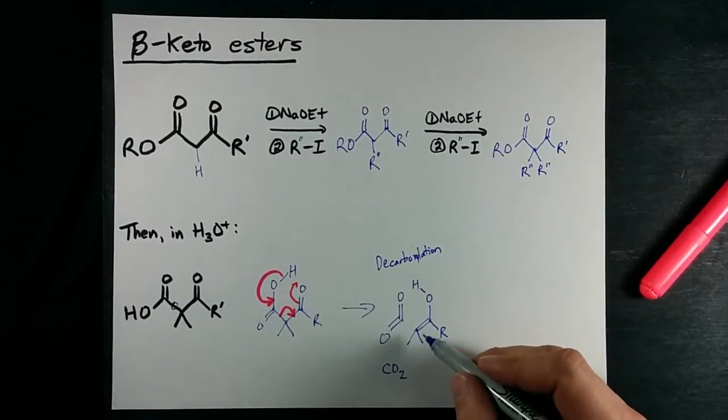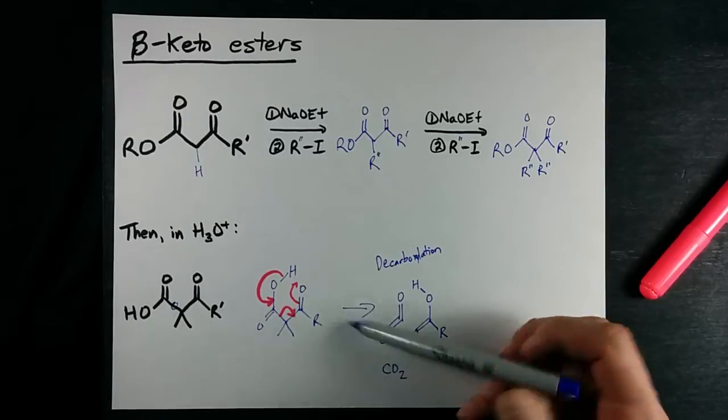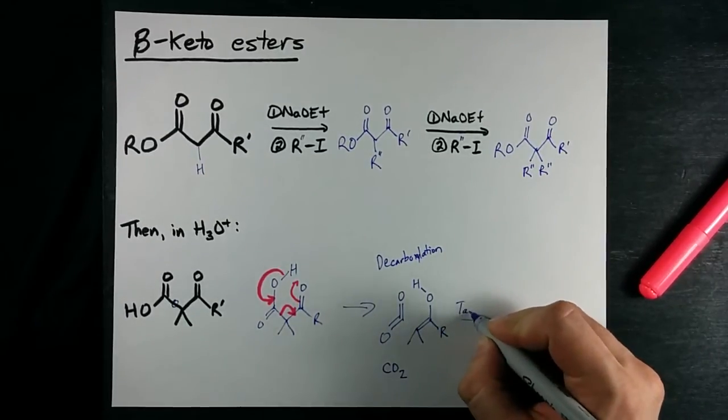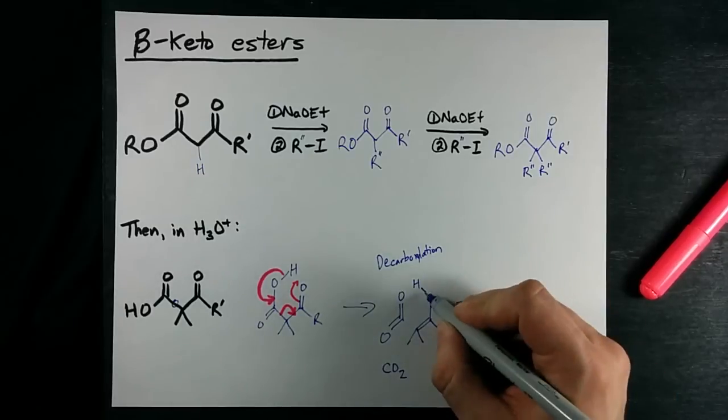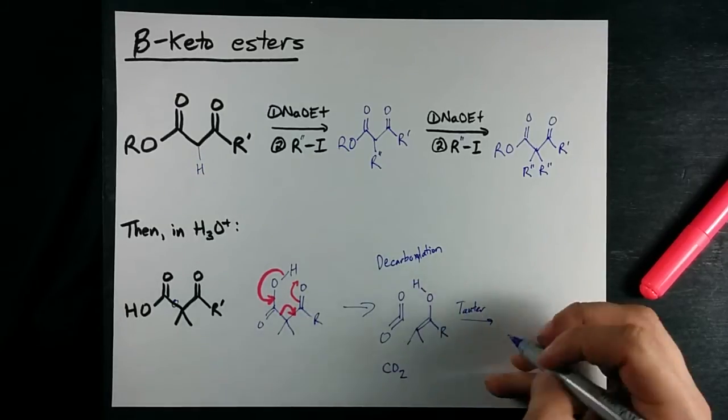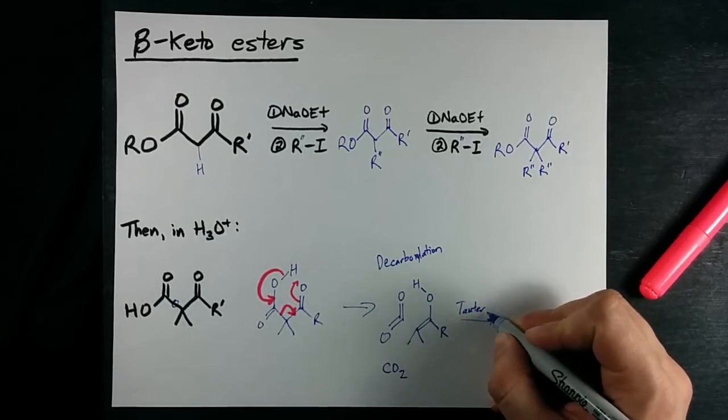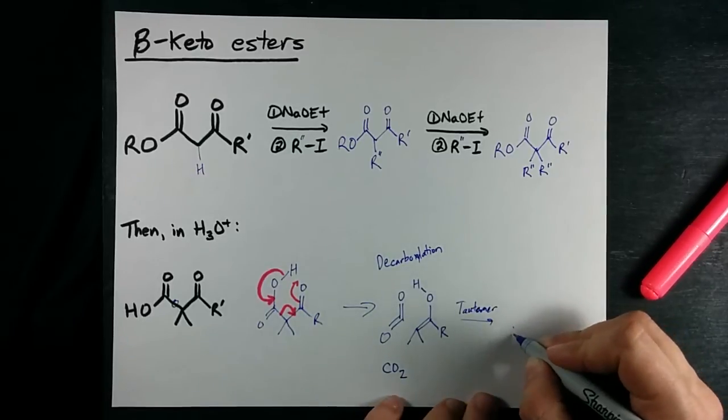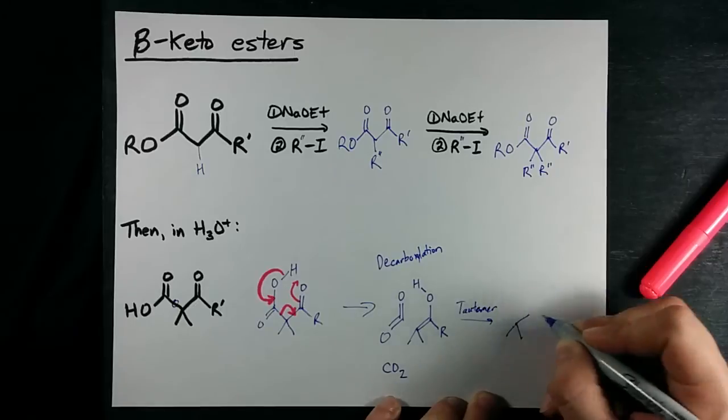Now this is an alkene with an alcohol. You can actually create a tautomer of that, which is just when you move the H from one to the other and move the electrons to end up with a single bond there and a double bonded O instead.